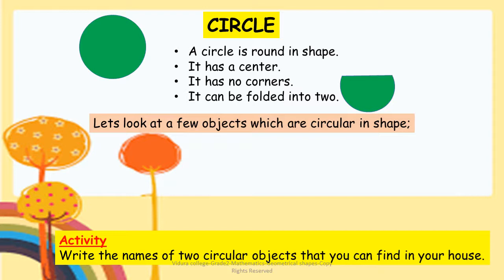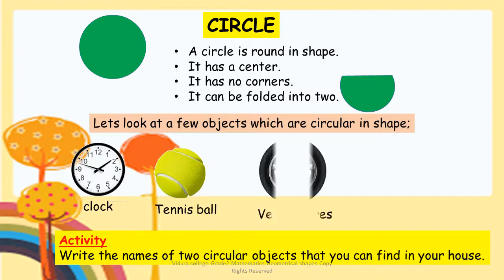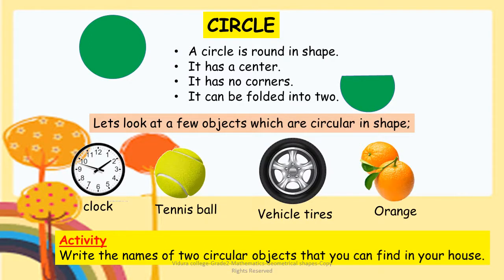Now, let's look at a few objects which are circular in shape: a clock, tennis ball, vehicle tires, and orange. Do the activity given — write the names of two circular-shaped objects that you can find at your home.